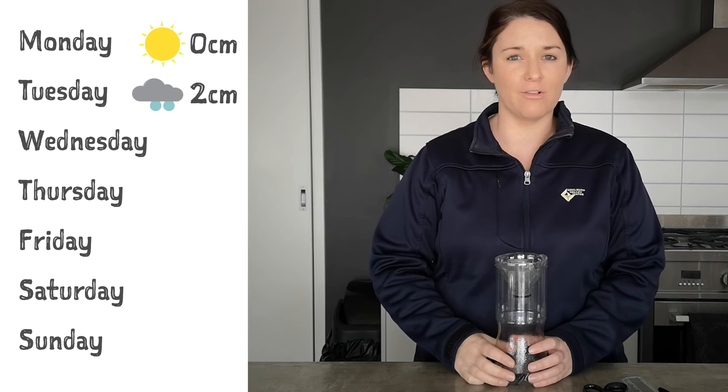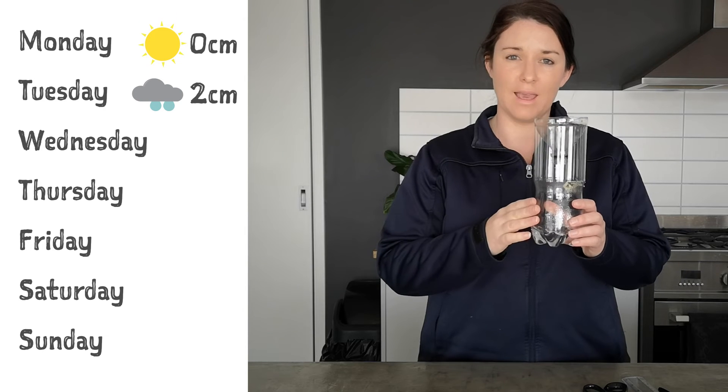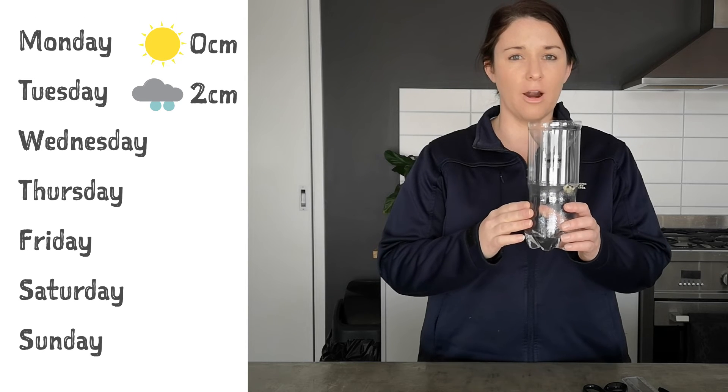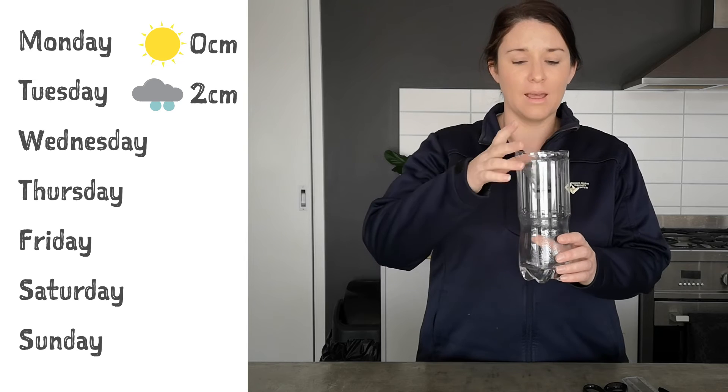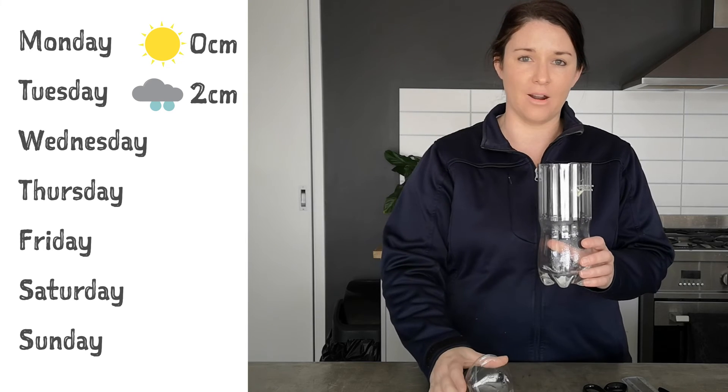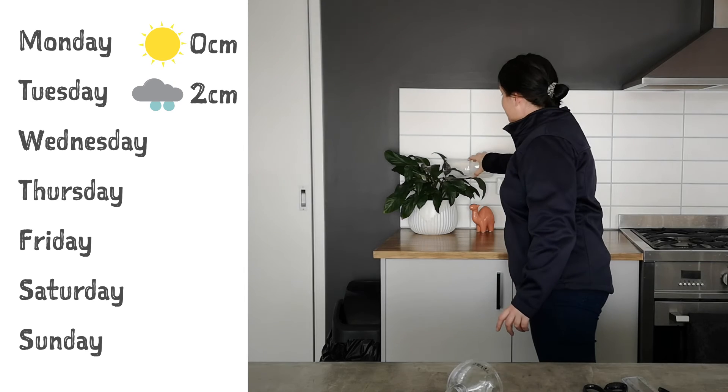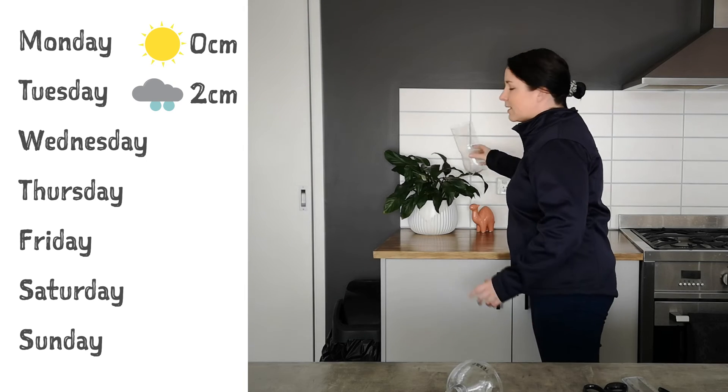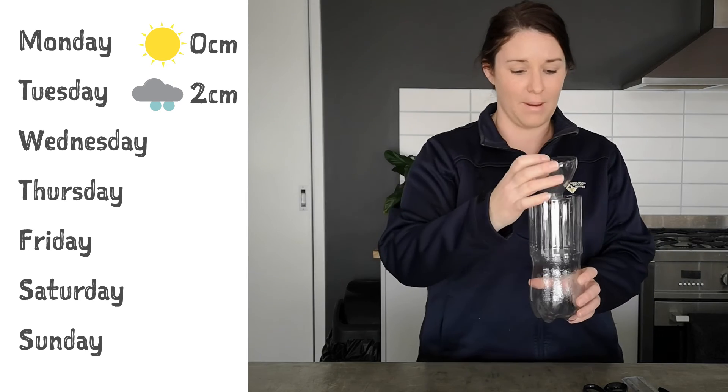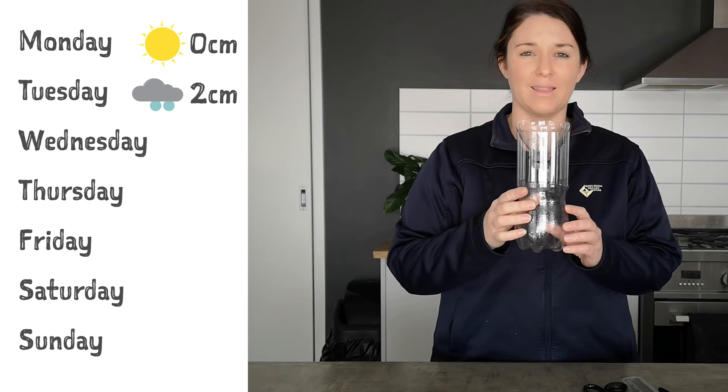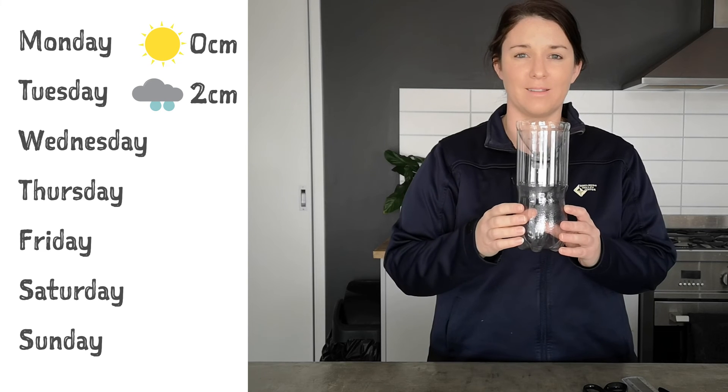So now that we've got that recorded, we need to empty out our rain gauge for tomorrow in case it rains again. I like to pour the water out onto some plants so that we don't waste it. And now it's ready to pop our funnel back in and put it back in the garden and see what happens for the rest of the week.